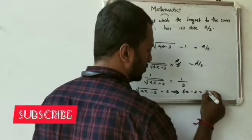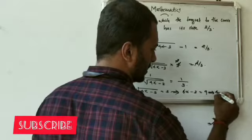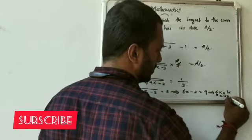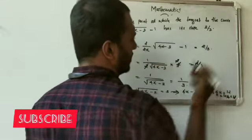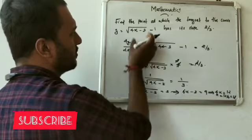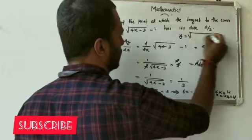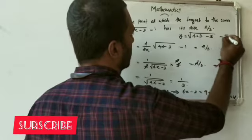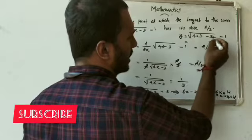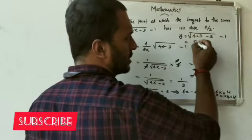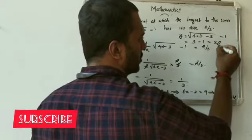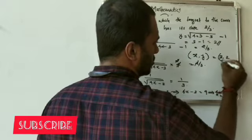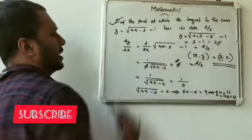4x minus 3 equals 9 implies 4x equals 9 plus 3, which equals 12, so x equals 3. Substituting x equals 3 into y equals root of 4x minus 3 minus 1: y equals root of 12 minus 3 minus 1 equals root of 9 minus 1 equals 3 minus 1 equals 2. So the point is (3, 2).